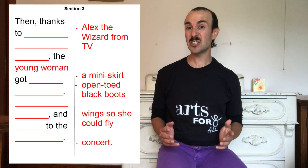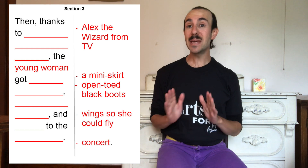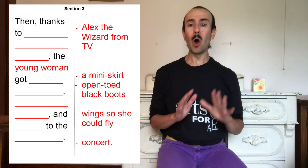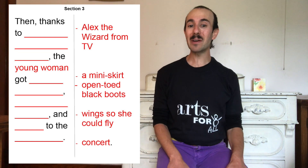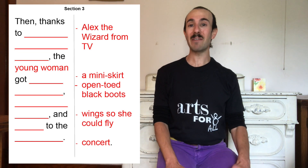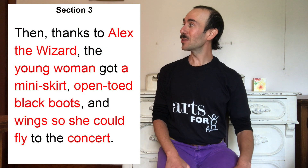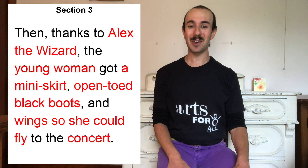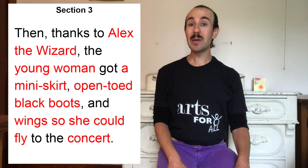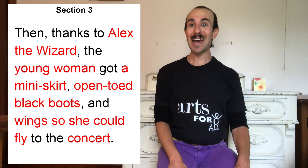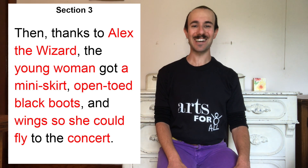Our second graders decided on a concert, so they gave Skyrella a miniskirt, open-toed black boots, and a pair of wings so she could fly there. Pause the video if you want to write out this whole paragraph for yourself. Here's our example with the second graders' ideas inserted: Then, thanks to Alex the Wizard, the young woman got a miniskirt, open-toed black boots, and wings so she could fly to the concert.